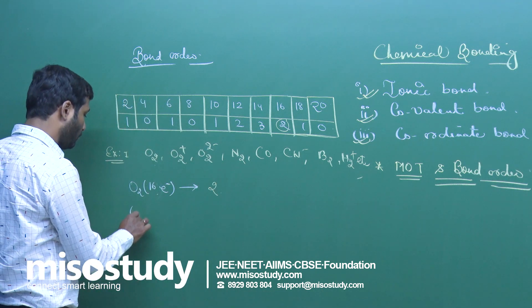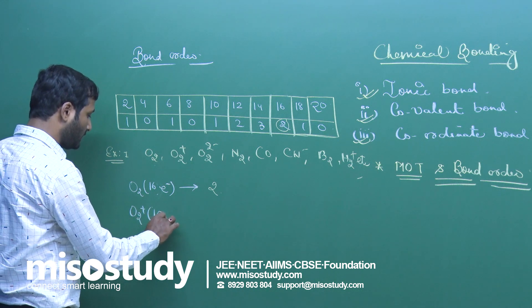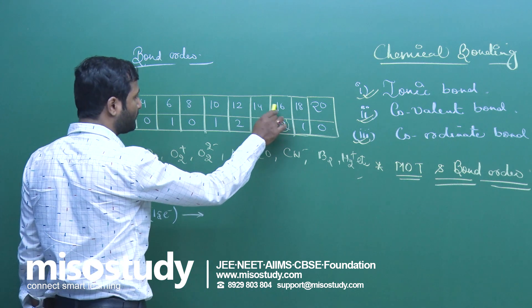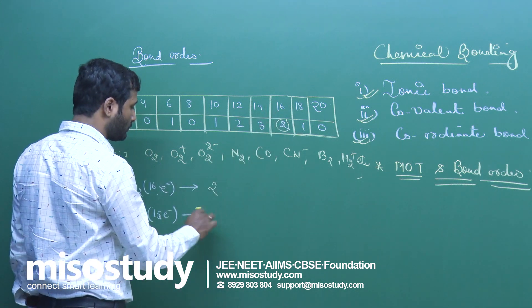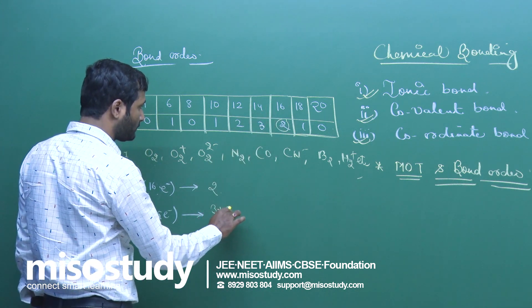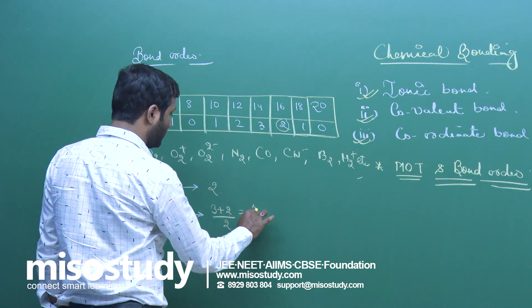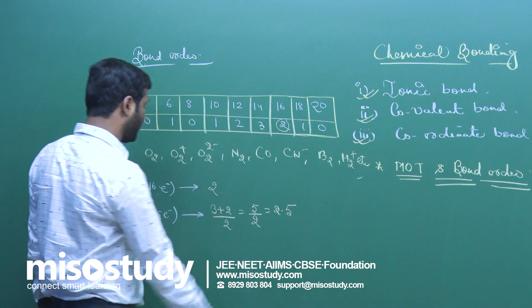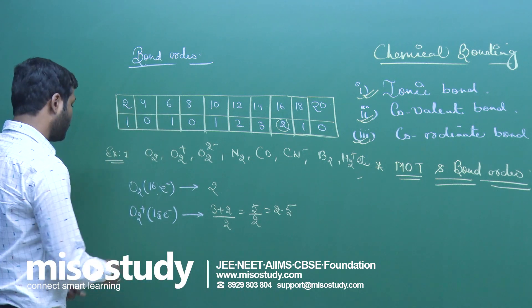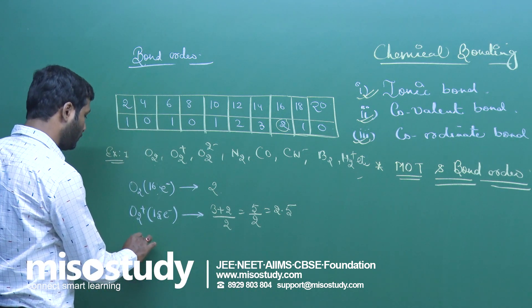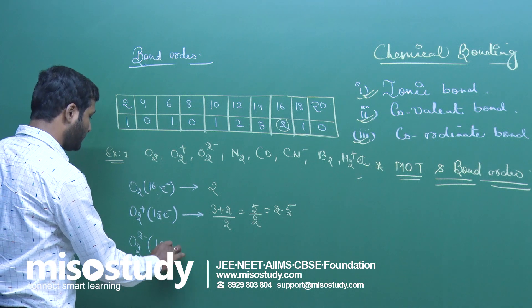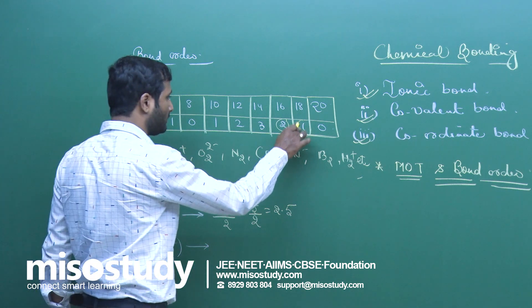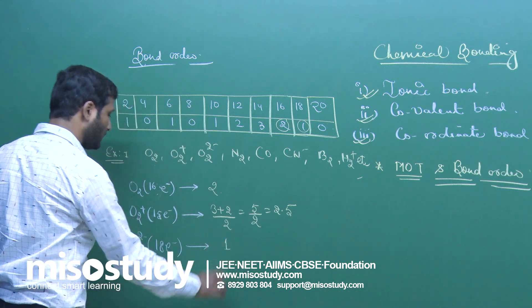The next one is O2+. This is a 15-electron system. 15 comes between 14 and 16, so the average is (3 + 2) / 2 = 5/2 = 2.5. The next one is O2²⁻, an 18-electron system. Below 18 there is 1, so the bond order is 1.